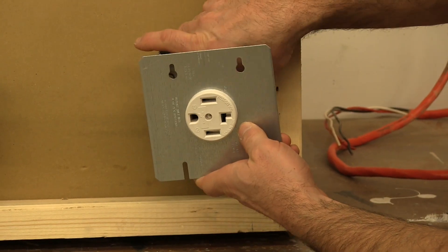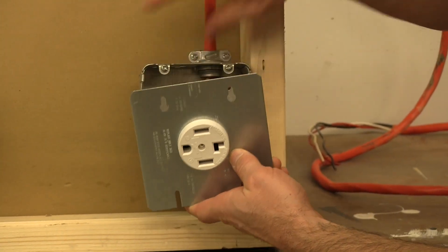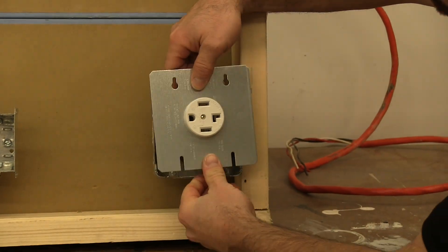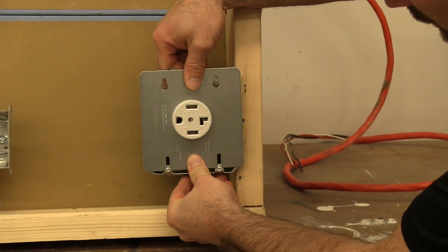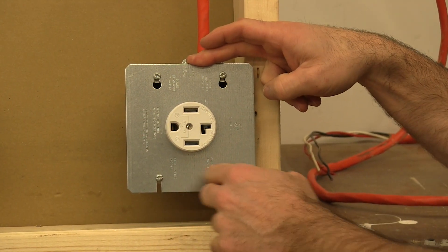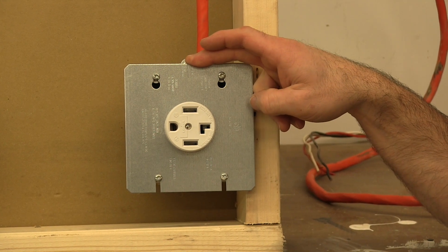So once you have everything attached, simply take some time to get these wires folded back in there without kinking them and lining everything up. Line everything up, get it in place, tighten your screws up and you're good to go.